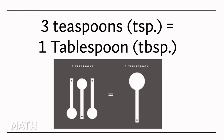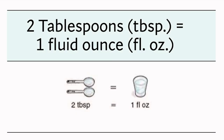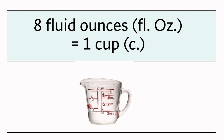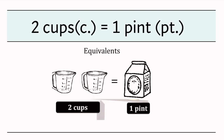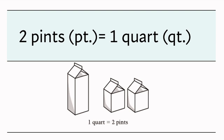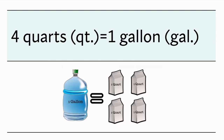Three teaspoons equal one tablespoon. Two tablespoons equal one fluid ounce. Eight fluid ounces equal one cup. Two cups equal one pint. Two pints equal one quart. Four quarts equal one gallon.